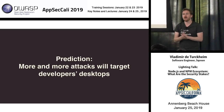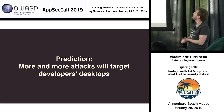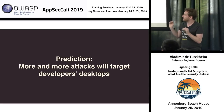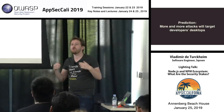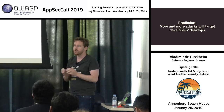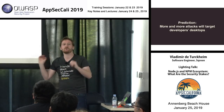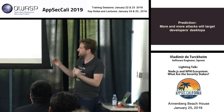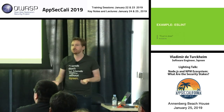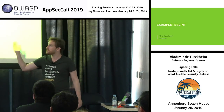This is a prediction I'm making here at OWASP AppSec California 2018: more and more attacks this year will target developers' desktops — not through email phishing, not through bad documents, not through Word documents with macros, but through malicious NPM packages. And to demonstrate that, it actually happened last year a couple of times. The main one is ESLint.